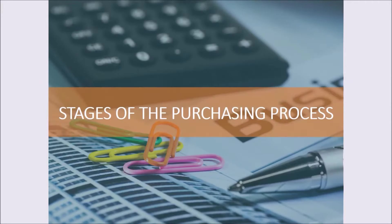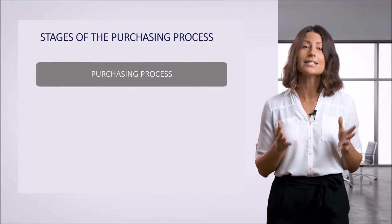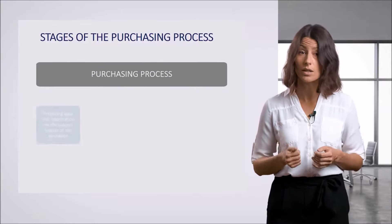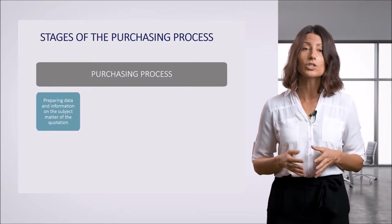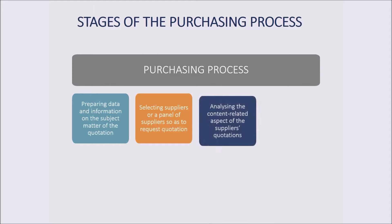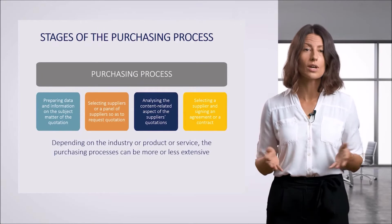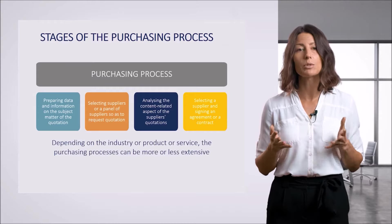Let's move on to discussing the stages of the purchasing process. The purchasing process can be divided into several stages: 1. Preparing data and information on the subject matter of the quotation. 2. Selecting suppliers or a panel of suppliers to request quotation. 3. Analyzing the content-related, technical, or commercial aspects of the supplier's quotations. 4. Selecting a supplier and signing an agreement or contract. Of course, depending on the industry or product or service, the purchasing processes can be more or less extensive.